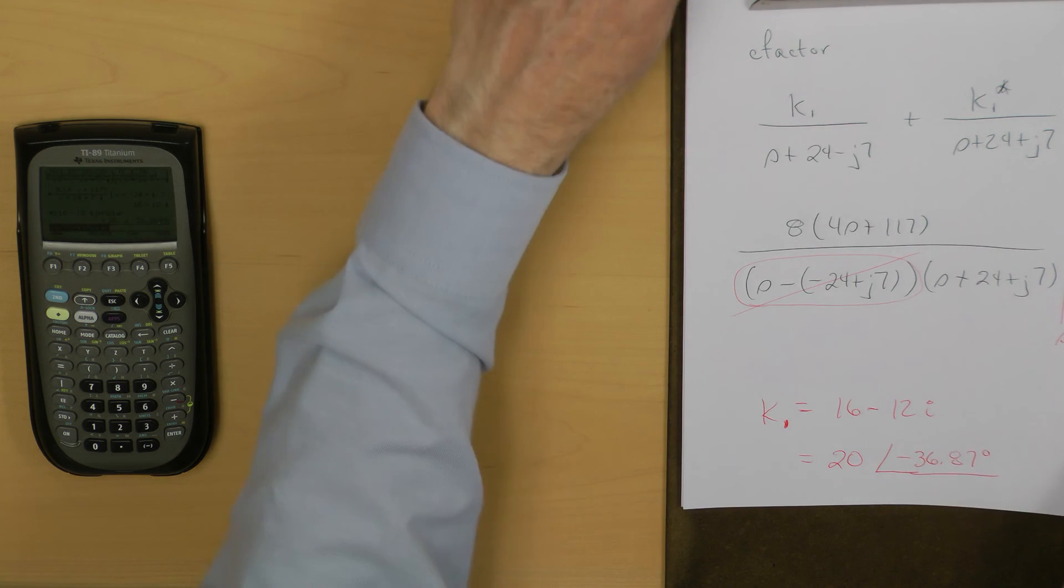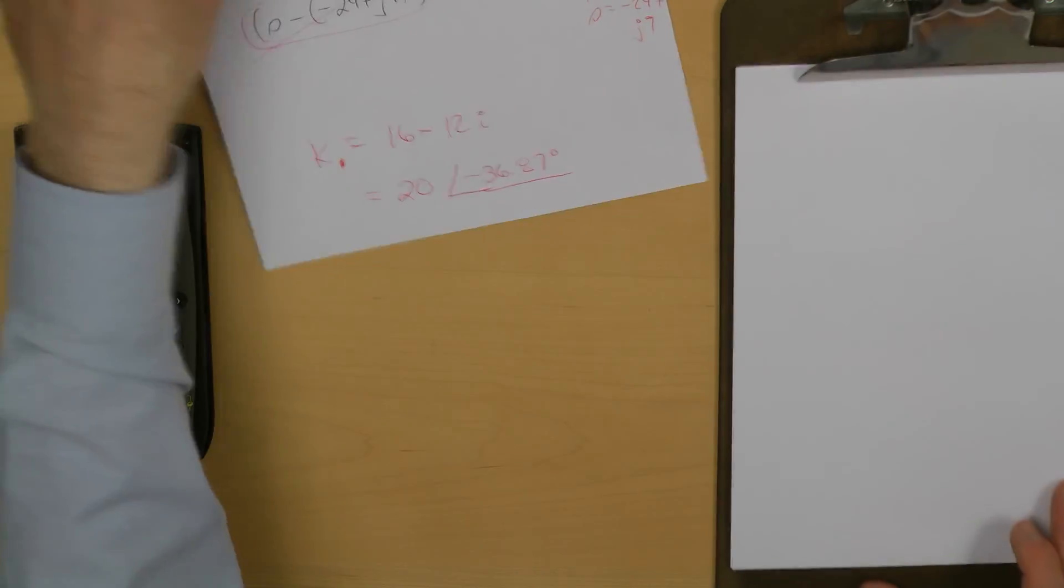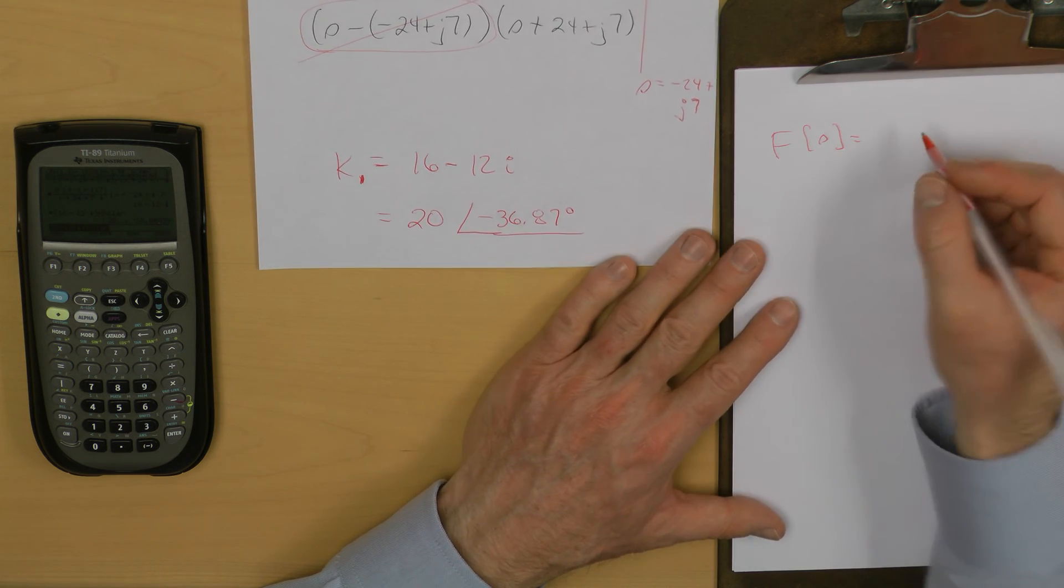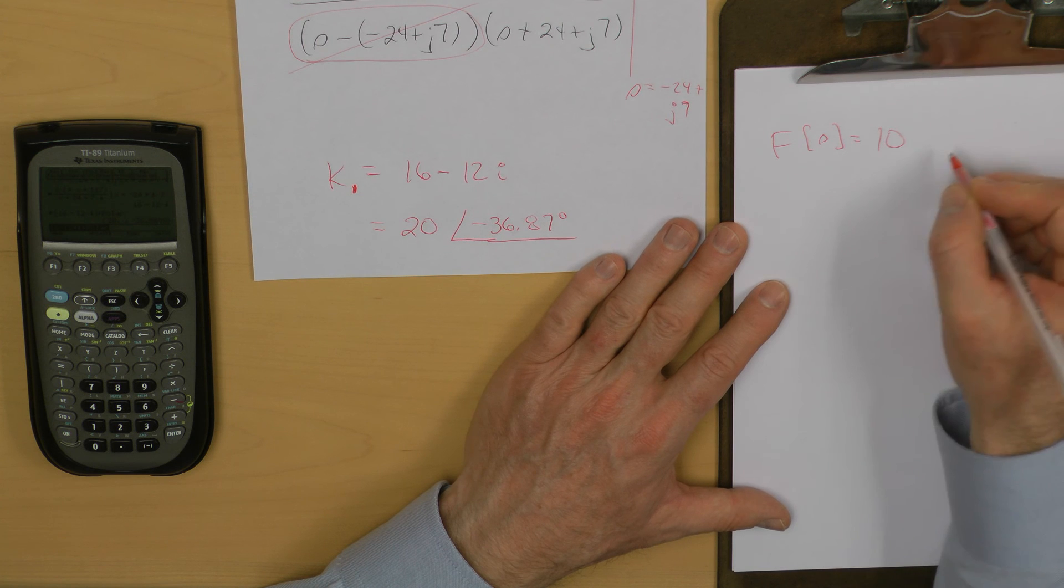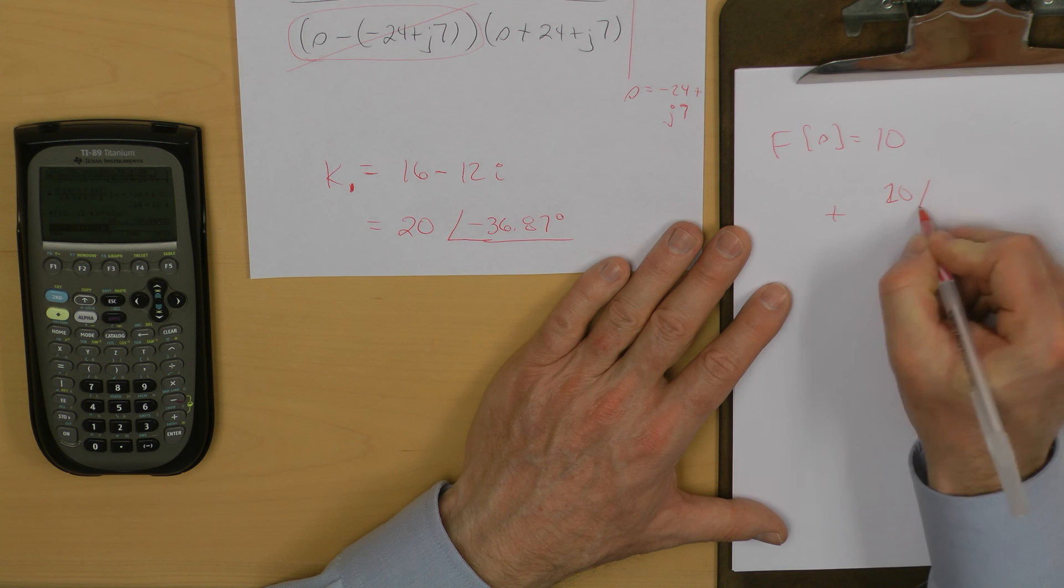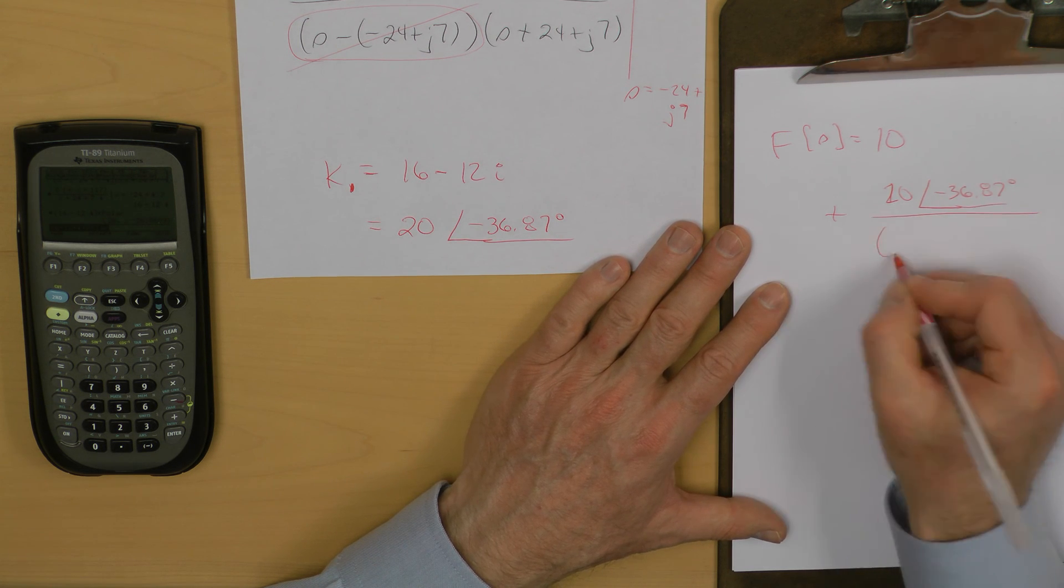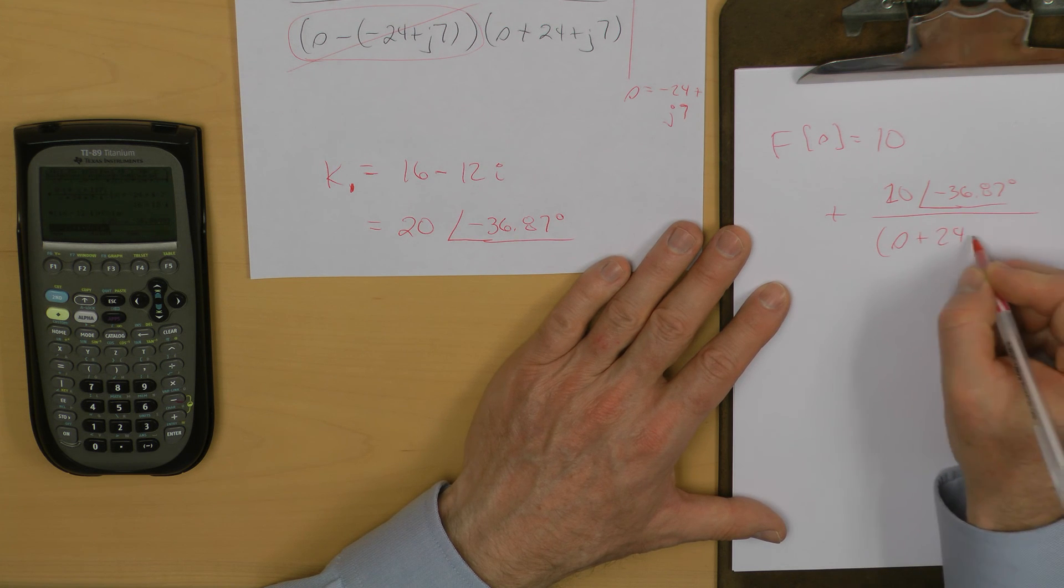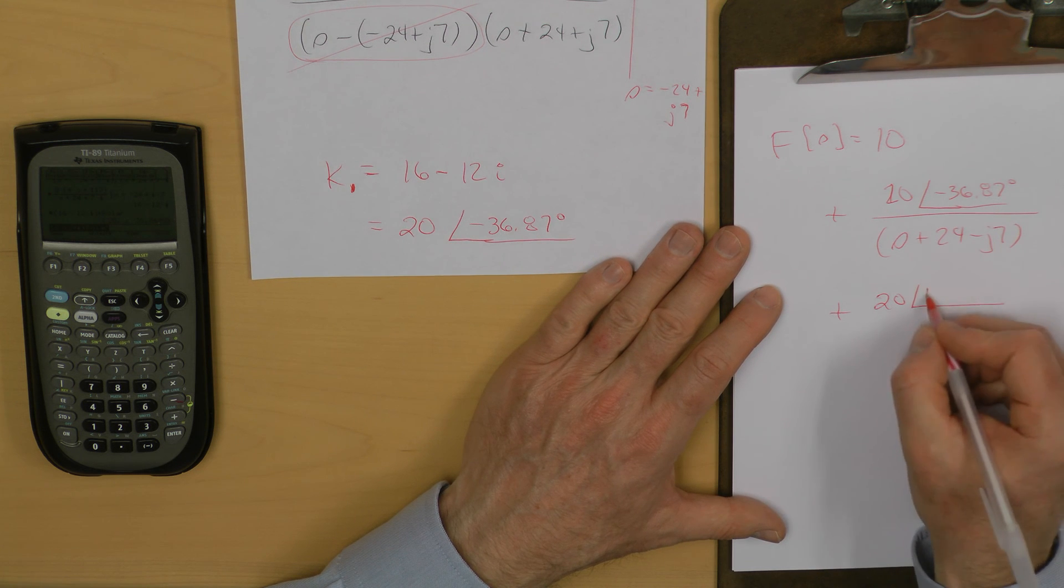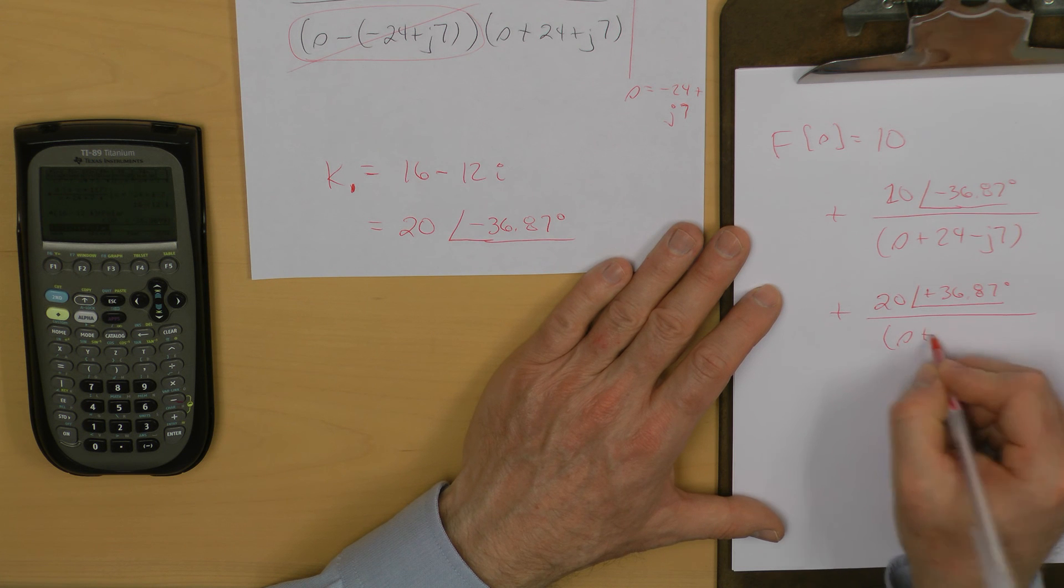That now allows me to say that I have the following expression. I now have capital F of S equaling what I factored out initially, 10, plus these other two pieces. I have 20 at an angle of minus 36.87 degrees over S plus 24 minus J7 plus its conjugate 20 plus 36.87 degrees over S plus 24 plus J7.